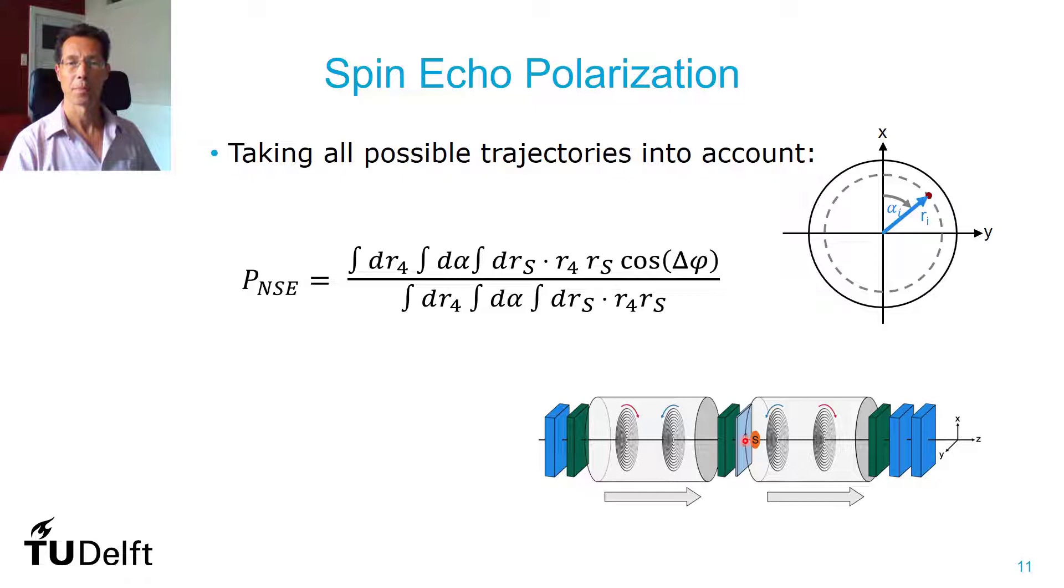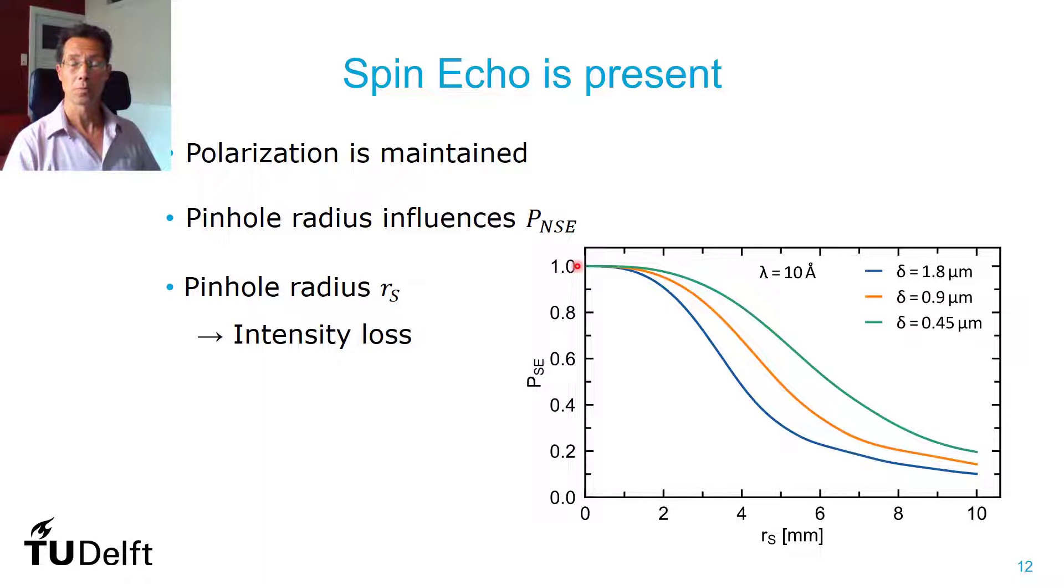Here, you see the polarization of the spin echo as we calculated for different currents through the shifter coils. It would correspond to certain spin echo lengths that you could reach, somewhere between half micrometer and two micrometers. And as a function of the pinhole at the sample position.